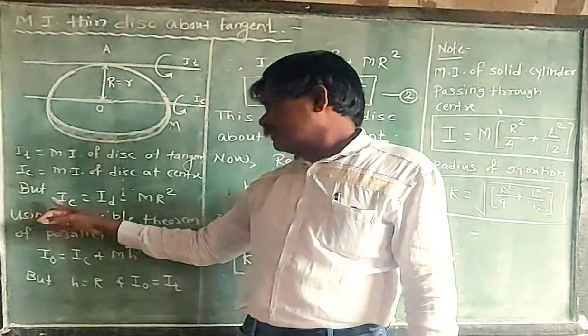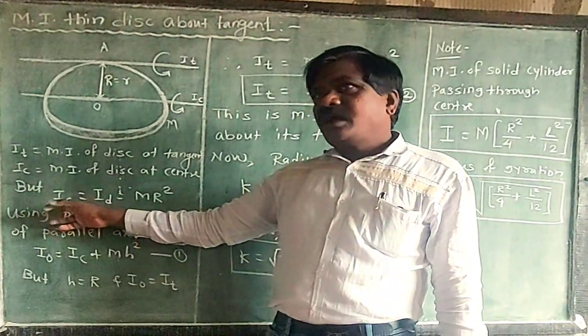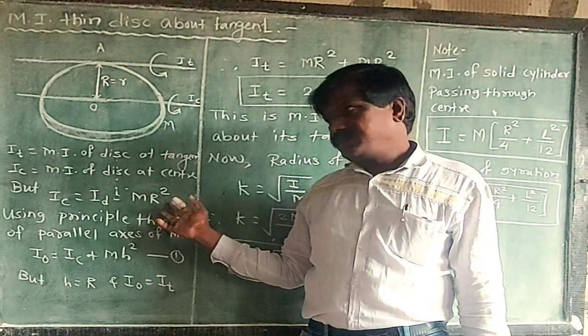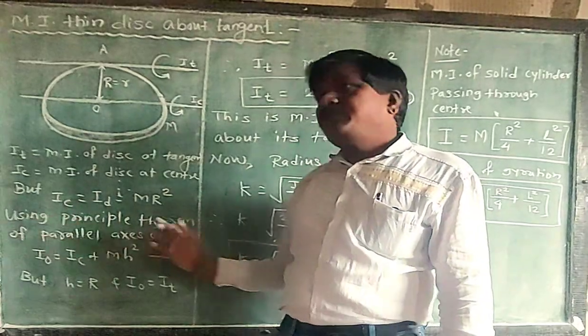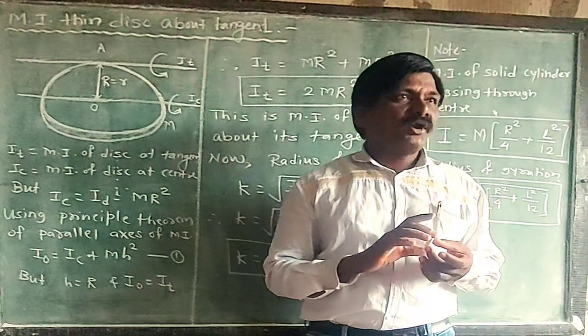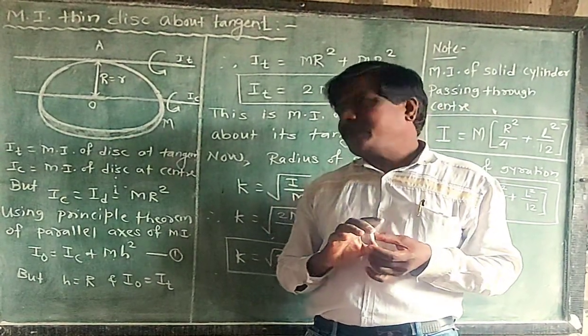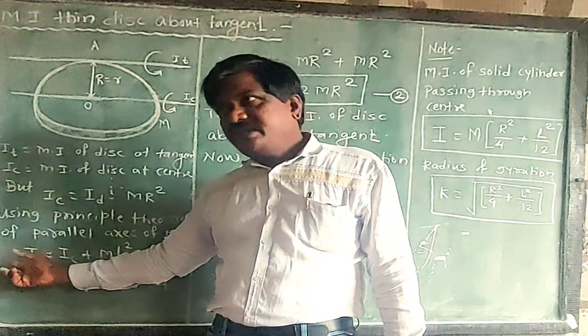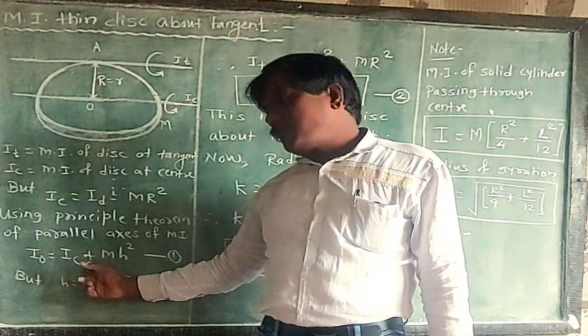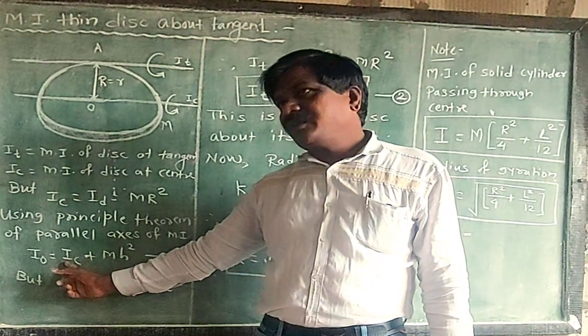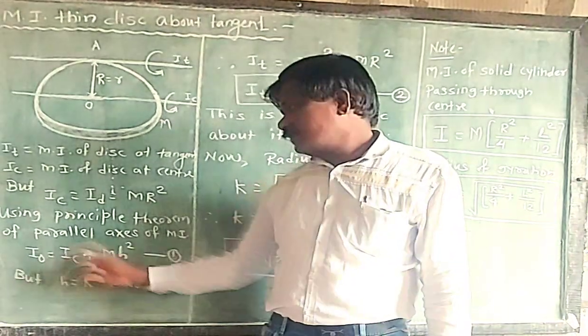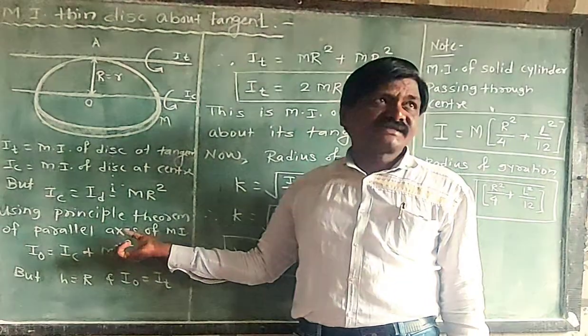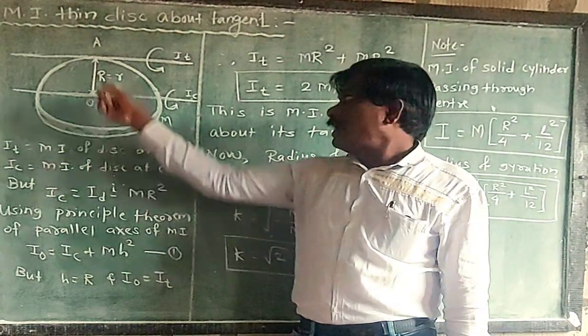Now we know that moment of inertia about an axis passing through its center, which is diameter, formula is 1/2 MR square. Now using the principle theorem for parallel axis of moment of inertia. Moment of inertia of any point is equal to sum of moment of inertia about an axis passing through its center, and product of mass and square of the distance between two parallel axes.